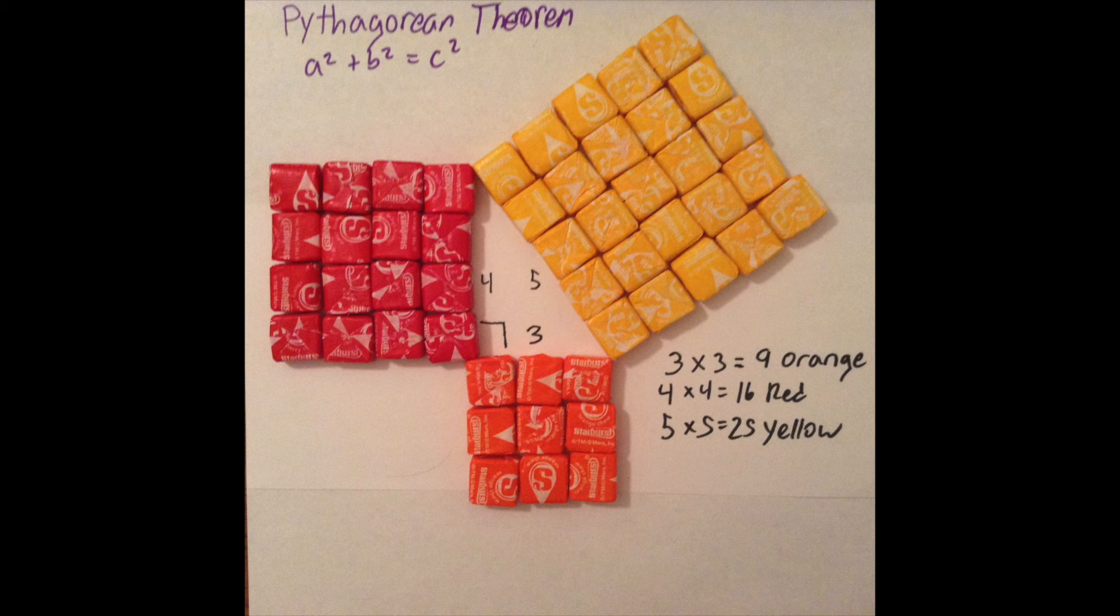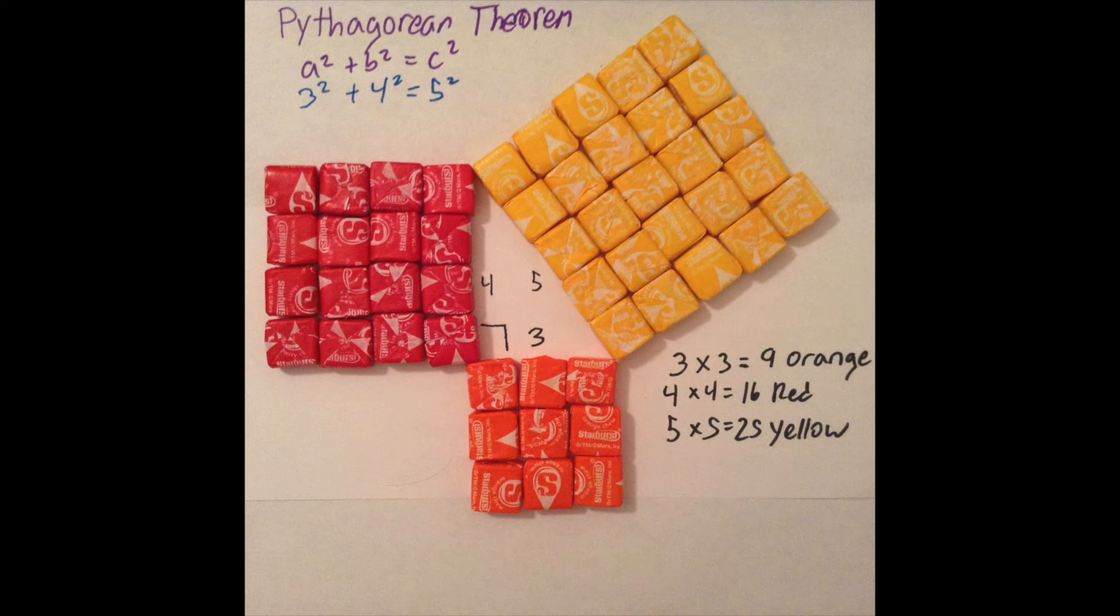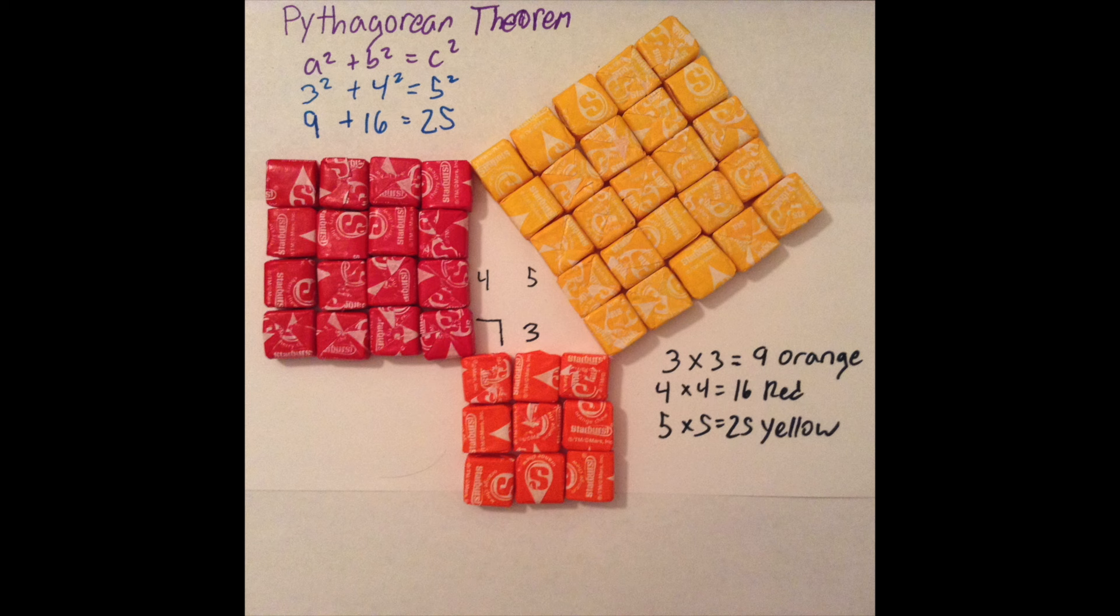Now, let's prove the Pythagorean Theorem. If we add the area of the orange square plus the area of the red square, that will equal the area of the yellow square. Or we can say 3 squared plus 4 squared equals 5 squared, which is 9 plus 16 equals 25.